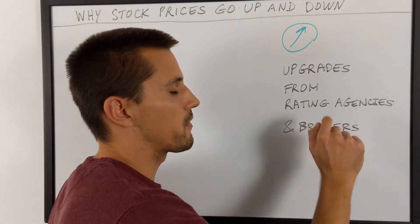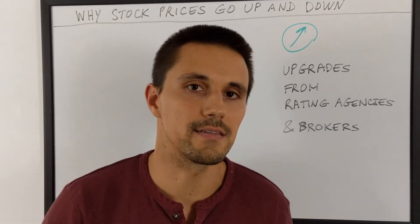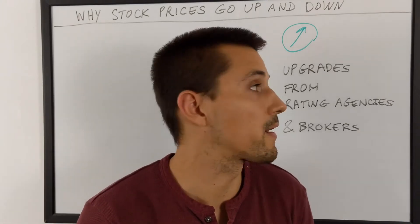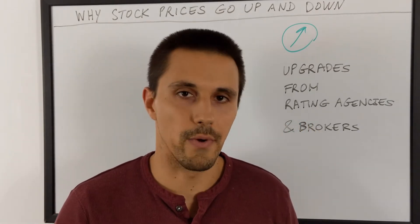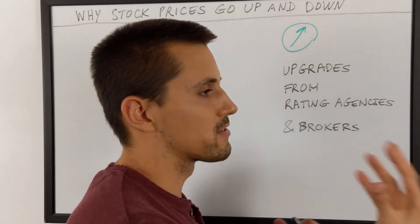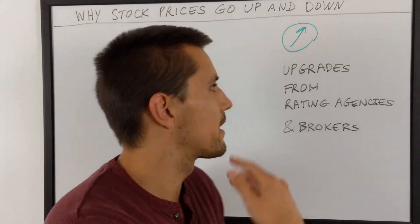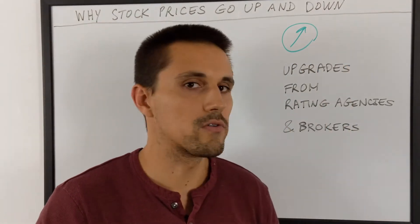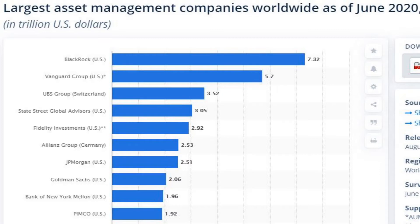The next big reason is upgrades from rating agencies and brokers. Every listed company has a very close eye on it, watched on a daily basis, because it has a huge impact on the stock price. A listed company is followed by analysts and rating agencies such as Fitch, Standard & Poor's, and Moody's — the big three that everybody follows. They give a grade to a company and also an outlook, and if it's getting better, it has a big impact on the stock price. Same for brokers and asset managers — for example, if BlackRock is buying your stock or advising their clients to buy, it's going to go up because there is more demand.